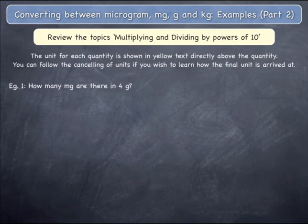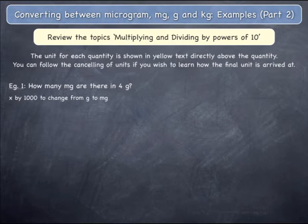Example 1. How many milligrams are there in 4 grams? Since you are changing from grams to milligrams, you must multiply the starting quantity by 1,000.